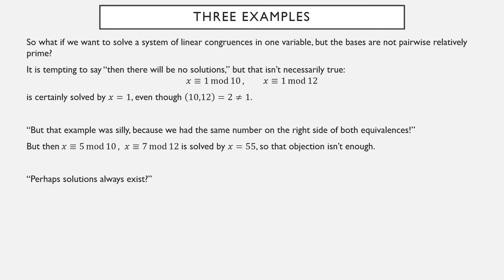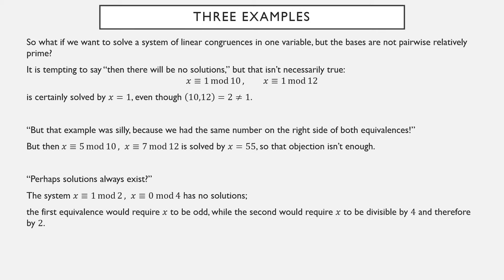Some might say, well, maybe solutions always exist. However, this system — x equivalent to 1 mod 2 and equivalent to 0 mod 4 — can't possibly have any solutions. The first says x is odd: equivalent to 1 mod 2 means a multiple of 2 plus 1, an odd number. The second equivalence, however, says divisible by 4, and if you're divisible by 4, you're definitely divisible by 2, so you're even. A number cannot be both even and odd, so this system can't possibly have any solutions.